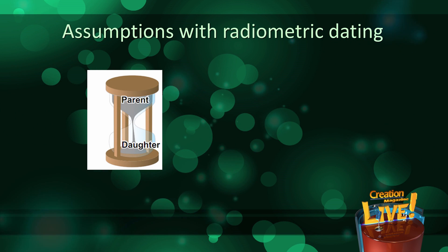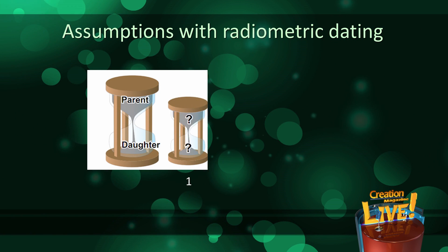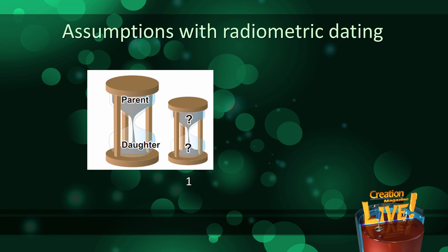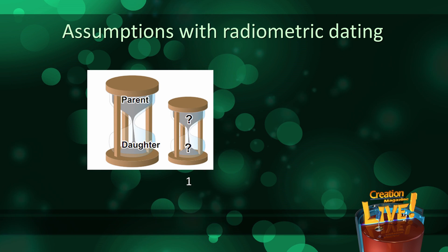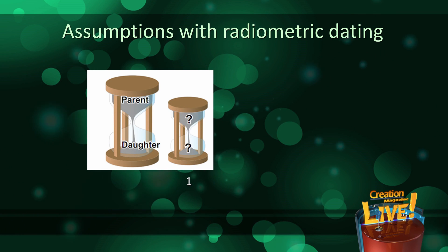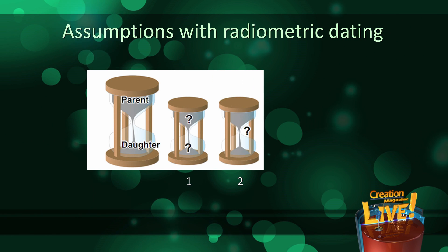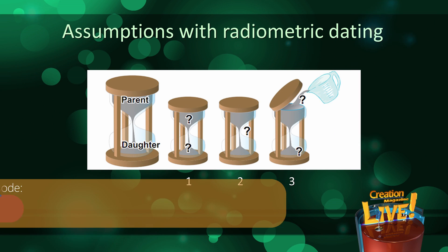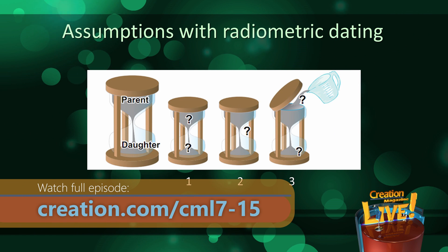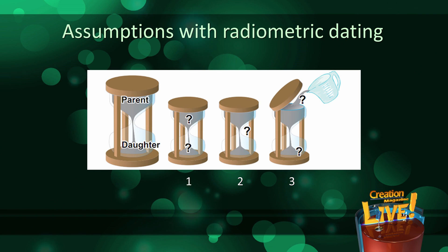There are three main assumptions here. Number one, the starting conditions are known — for example, that there was no daughter isotope present at the start, or that we know how much was there. Number two, nuclear decay rates have always been constant. And number three, systems were closed or isolated so that no parent or daughter isotopes were lost or added. All three of those assumptions can cause huge errors in the dates, and we'll get to some examples of where the dates were way off in a few minutes.